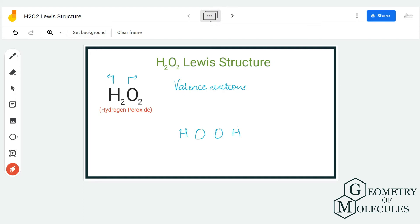To understand its Lewis structure, we are first going to look at the total number of valence electrons for this molecule. Hydrogen has one valence electron and oxygen has six valence electrons in its outer shell. But we have two hydrogen atoms and two oxygen atoms, so we have a total of 14 valence electrons for H2O2.